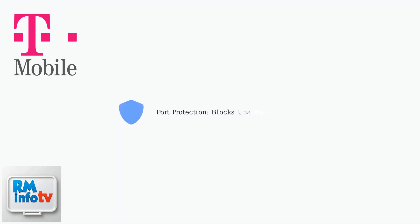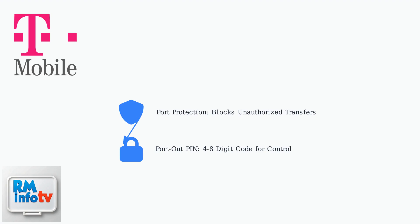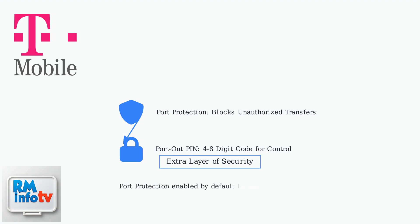Port protection blocks transfers by default. To remove it, you first enable a port out PIN — a code you create that must be provided for any porting request. Think of it as an extra layer of security mandating the PIN for porting requests. Port protection is enabled by default for most accounts, so understanding how to manage it is essential for your security.